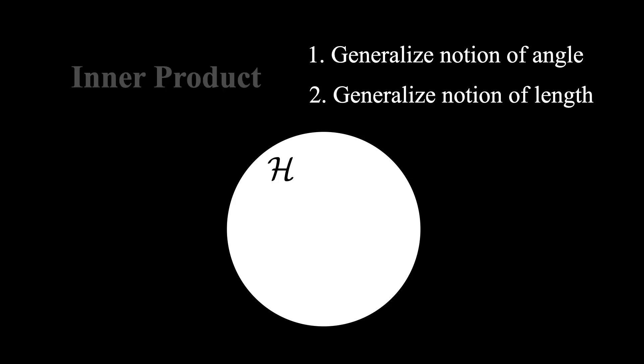And this is just what the inner product or scalar product is used for. By generalizing the dot product from 3D space to any abstract vector space, the inner product allows for natural generalizations of angles and lengths in any vector space that has an inner product on it.